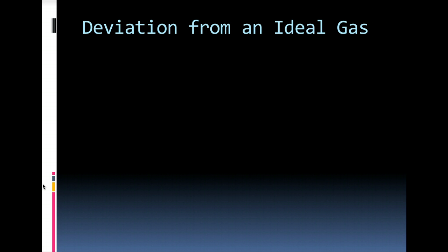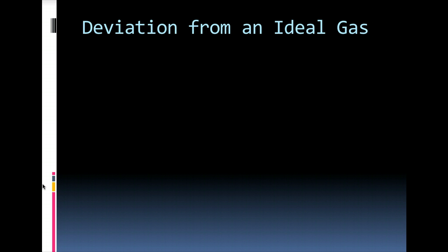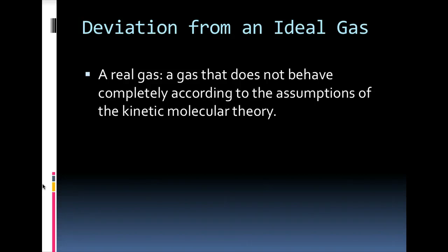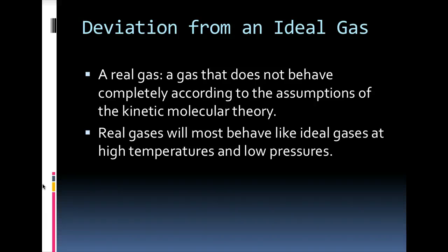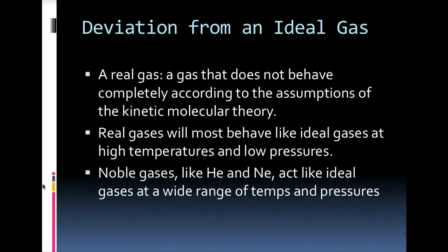Some gases will deviate from ideal gas behavior, and we call those gases real gases. A real gas is a gas that does not behave completely according to the assumptions of the kinetic molecular theory. You could kind of make an analogy to we have ideal students, students that do all their work perfectly all the time, or real students, kids who do most of their work most of the time. A real gas will behave like an ideal gas most of the time, but specifically at very high temperatures and low pressures. Noble gases, like helium and neon, act like ideal gases at a wider variety of temperatures and pressures.